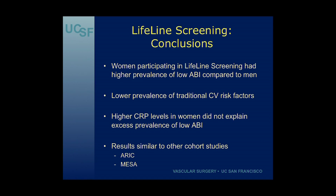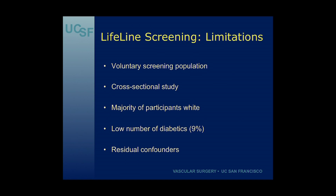Women in the Lifeline screening did indeed have a higher prevalence of low ABI compared to men, while also having a lower prevalence of traditional cardiovascular risk factors. However, the higher median CRP levels in women did not explain the excess prevalence of low ABI. Our results were similar to those other cohort studies mentioned. Limitations include that this is a voluntary screening population with cross-sectional associations, a majority white cohort, low number of diabetics, and reliance on self-report questionnaires — so there could be residual confounders.